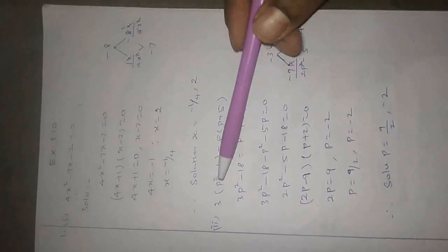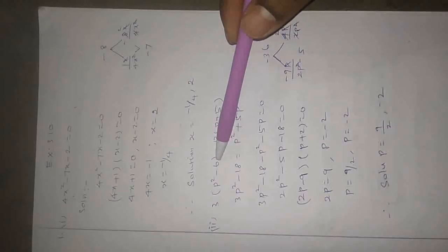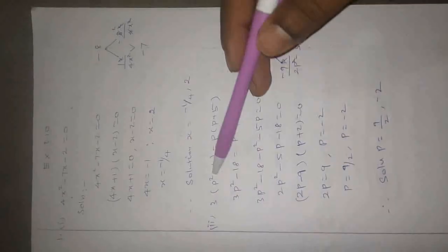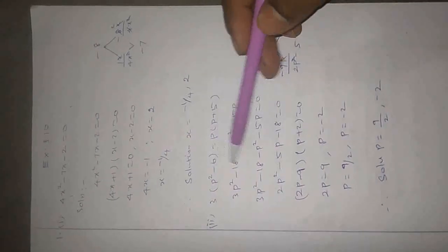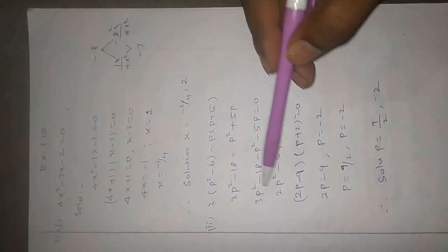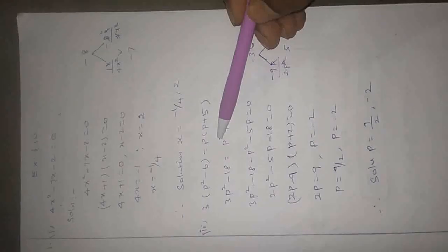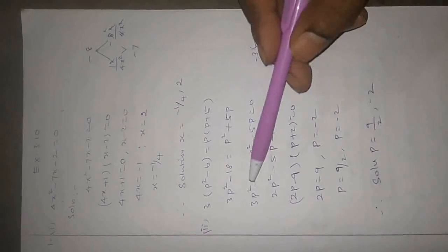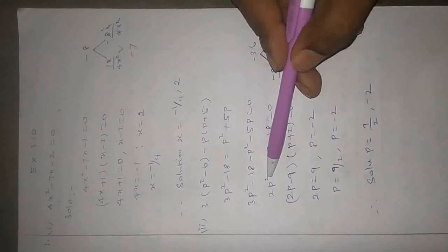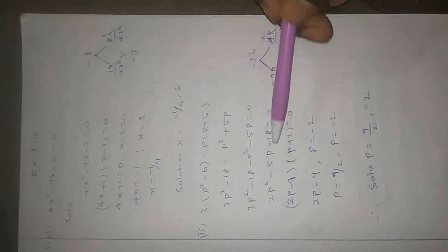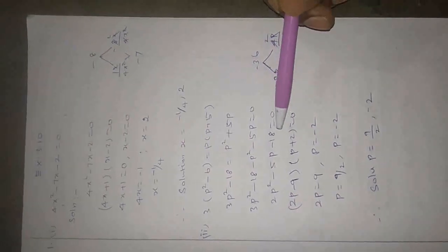Once more, let me explain. Given question: 3 into p squared minus 6 is equal to p into p plus 5. So: 3p squared minus 18 equals p squared plus 5p. Taking all terms to one side: 3p squared minus p squared minus 5p minus 18 equals 0, giving 2p squared minus 5p minus 18 equals 0. This is the quadratic equation solved by factorization method.